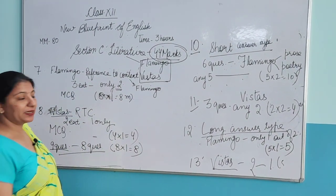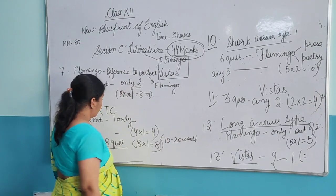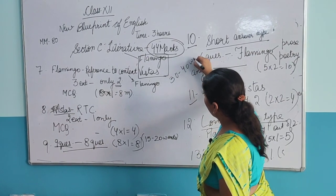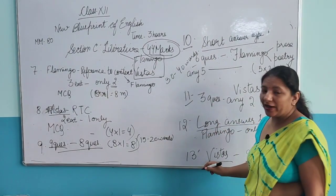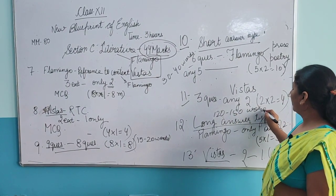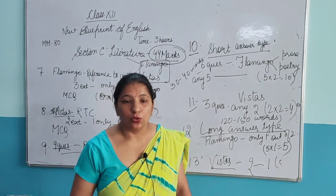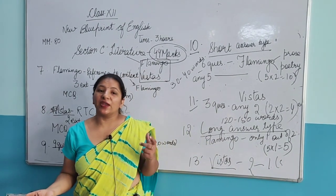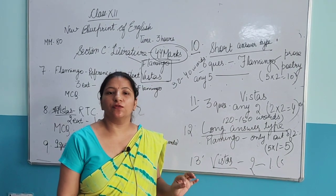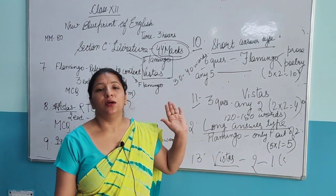Now let me tell you the word limits. The word limit for a 1-mark question is 15 to 20 words. The word limit for 2-mark questions is 30 to 40 words. And the word limit for 5-mark questions is 120 to 150 words. Whenever you get worksheets, adhere to the word limit because it is very important — you are awarded marks according to the word limit.